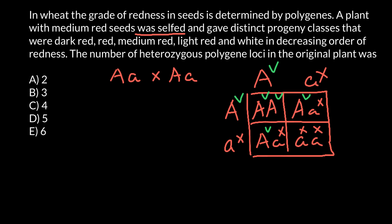We have dark red — that's one group; red — second; medium red — third; light red — fourth; and white — fifth group. So there are five distinct groups. Now the parental generation in the one-gene case would be of intermediate color. Once again, the problem states the grade of redness is determined by polygenes, and the plant with medium red was selfed, meaning both parents have the same genotype.